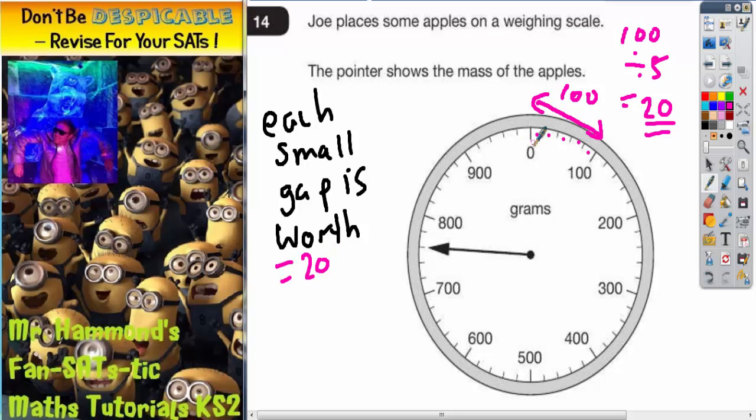Okay, so let's just double check that. So if we start on 0 and we go up in 20s, we go 20, 40, 60, 80, 100, 120, 140, 160, 180, 200, 220, 240, 260, 280, 300. And that will work all the way around the scale, including when we get to here.